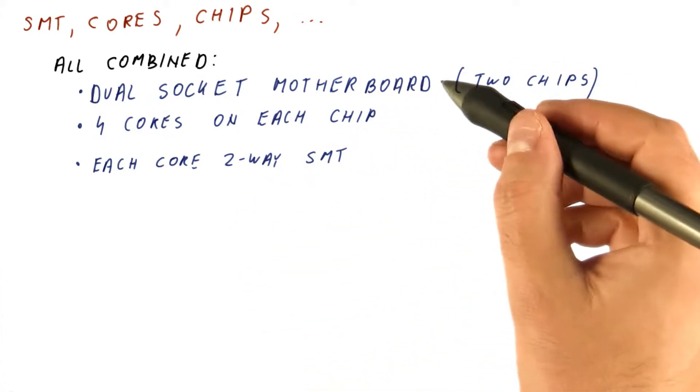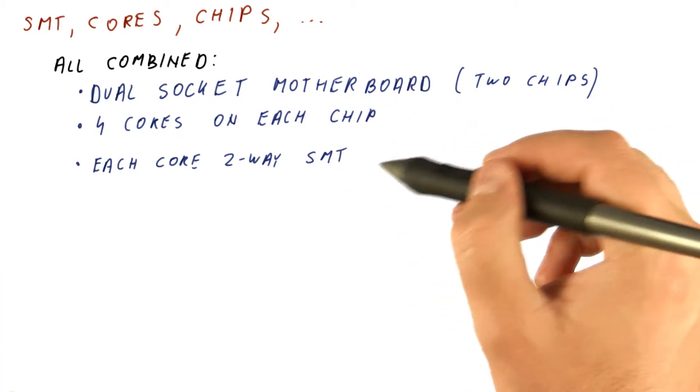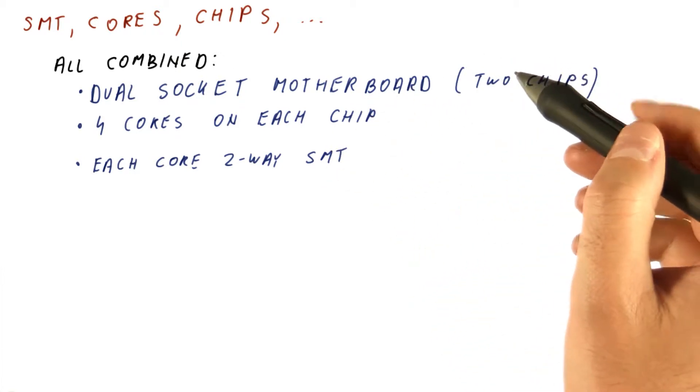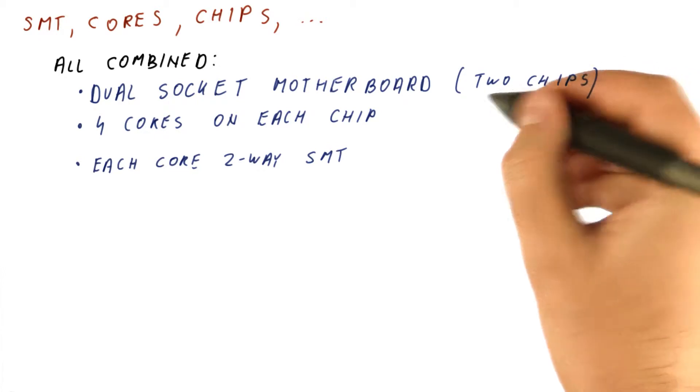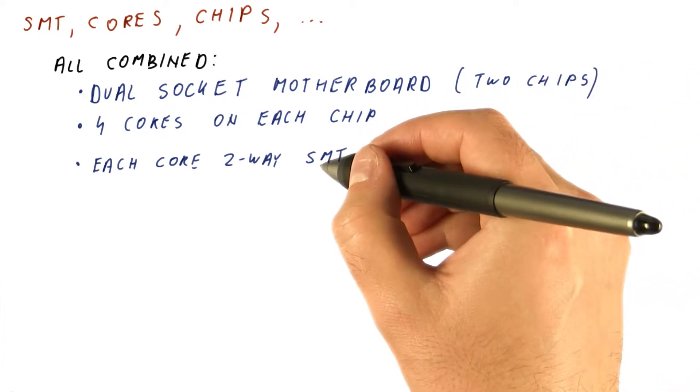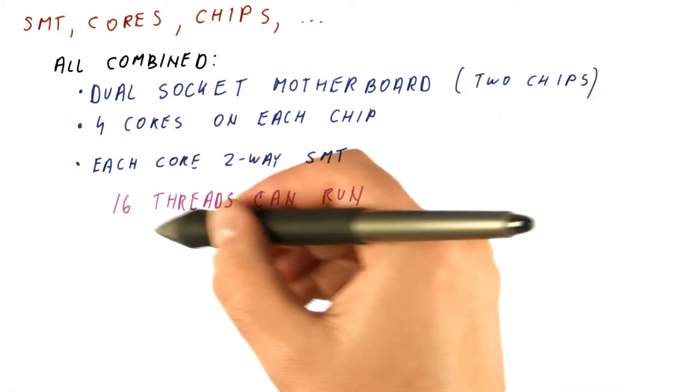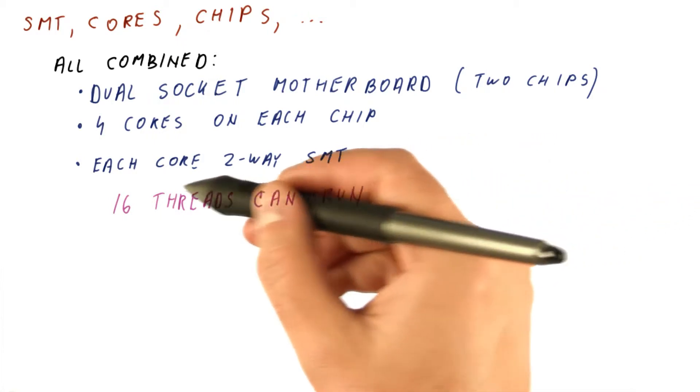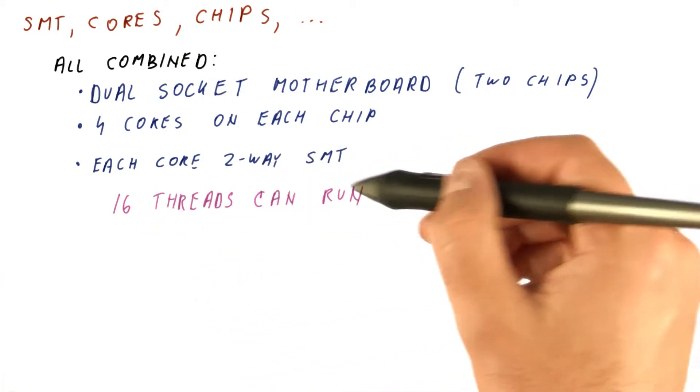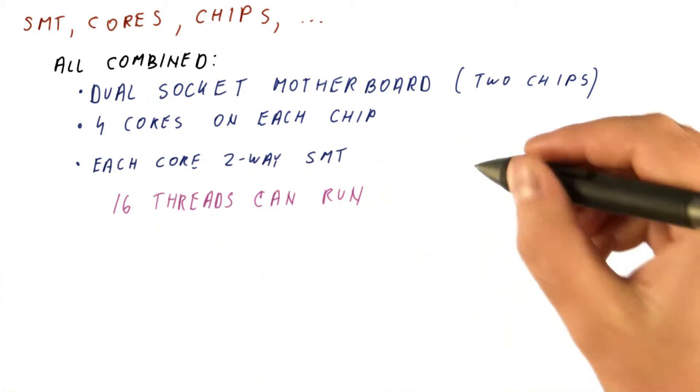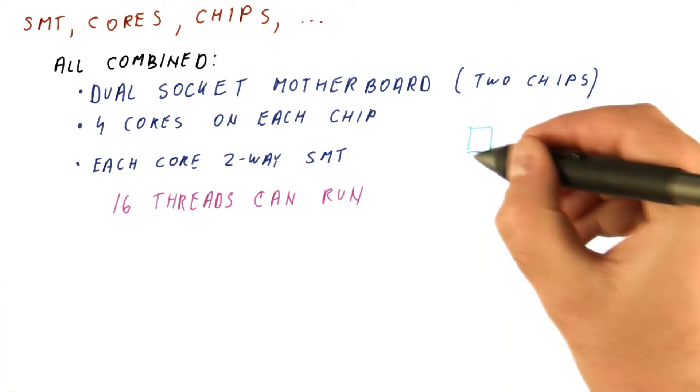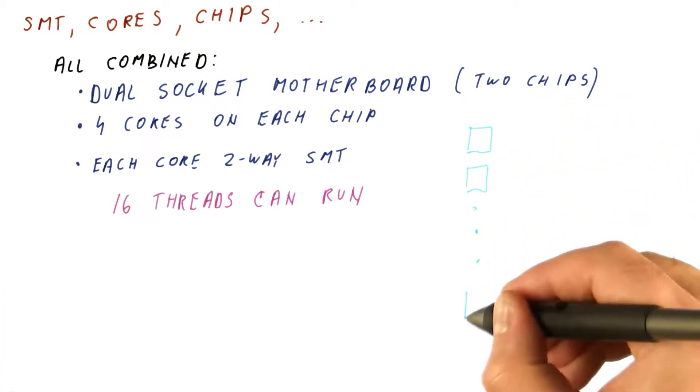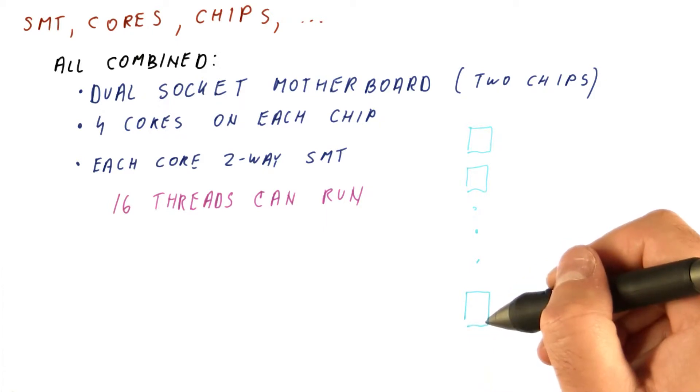As far as the programmer is concerned and as far as the operating system is concerned, what we really have is two times four times two, which means that 16 threads, or for that matter, 16 different single-threaded programs can run simultaneously, and a relatively simple operating system would just treat these as 16 largely equivalent cores.